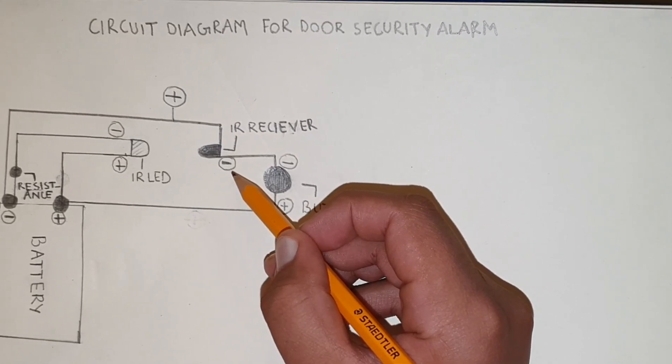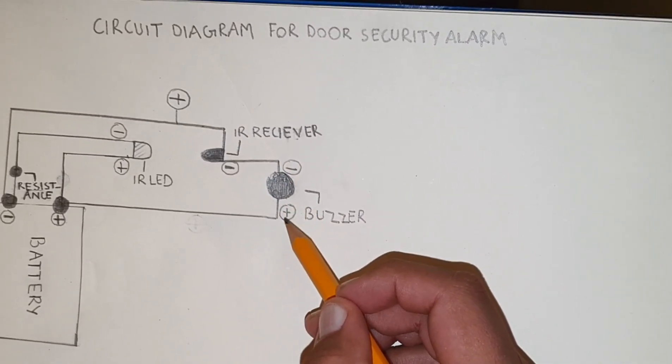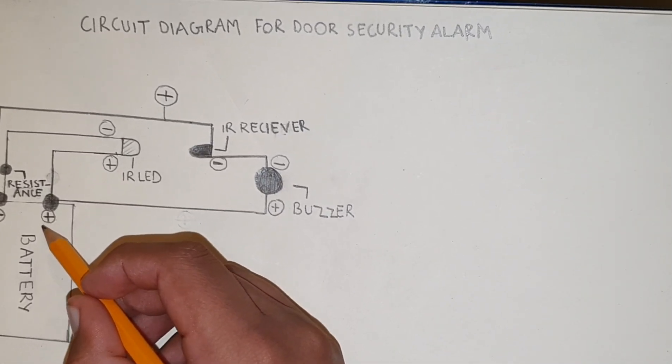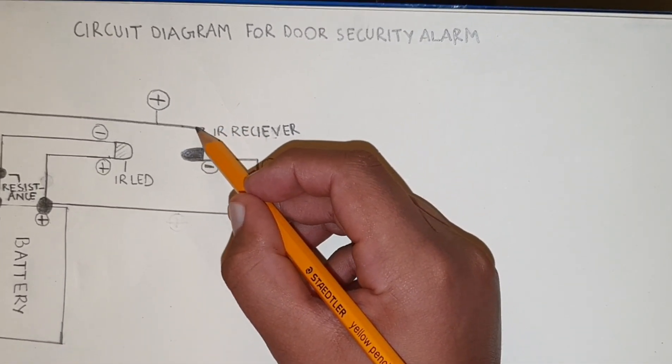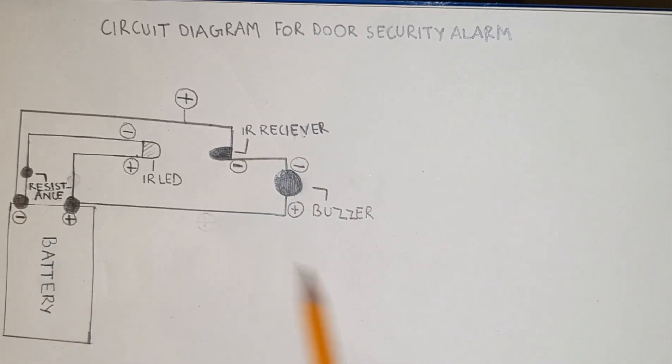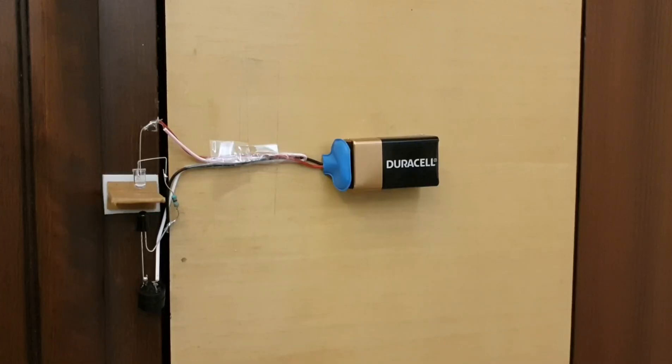The negative of the IR receiver is connected to the negative of the buzzer. The positive of the buzzer is connected to the positive of the battery. The positive of the IR receiver is connected to the negative of the battery.